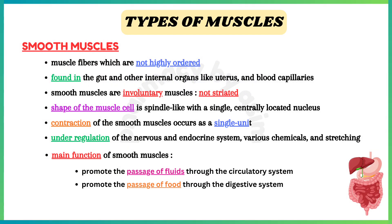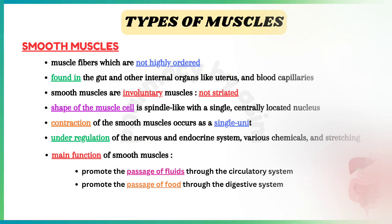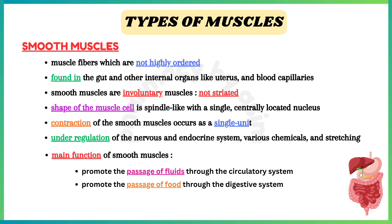The second one is smooth muscles. Smooth muscles are a type of muscle fibers which are not highly ordered. These are found in the gut and other internal organs, such as the urinary bladder, stomach, intestine, uterus, and the walls of blood capillaries. Smooth muscles are involuntary muscles which are not striated. The shape of the muscle cell is spindle-like with a single centrally located nucleus.